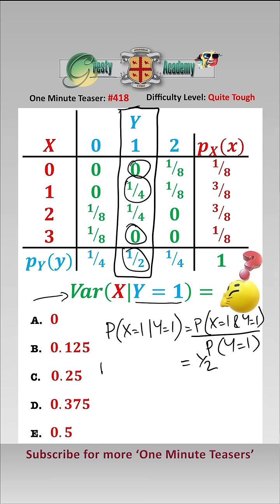And likewise, the probability that x equals 2, given y equals 1, is also equal to a half.